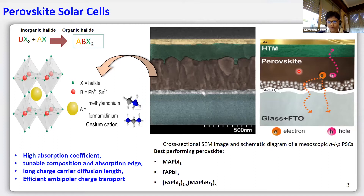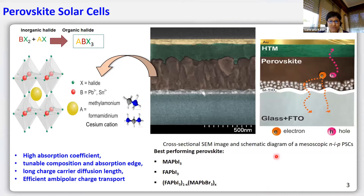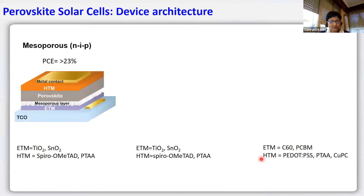Perovskite can not only absorb light but also transport electrons and holes to the respective electrodes. This is one of its unique optoelectronic properties — we call it ambipolar charge transport, meaning it can transport holes through the hole transport material to the cathode. We don't necessarily need an extra hole or electron transport layer, but without a hole transport material the efficiency decreases to around 10–12 percent. To facilitate higher charge extraction and improve efficiency, it is mandatory to use extra hole and electron transporting layers.